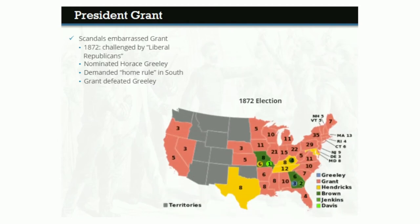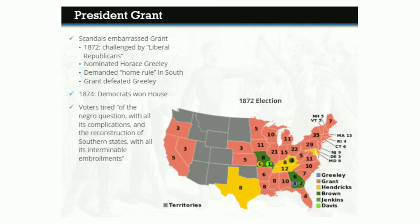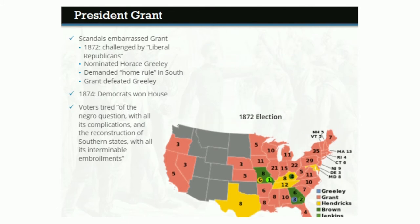But in 1874, for the first time since the Civil War, Democrats won control of the House of Representatives — a sure sign of a changing political mood across the country. As one Republican summed it up, voters had grown tired of the Negro question with all its complications and the Reconstruction of Southern states with all its interminable embroilments.